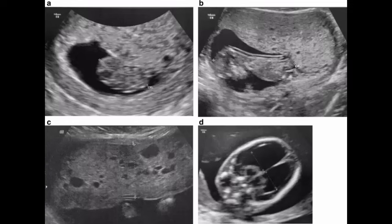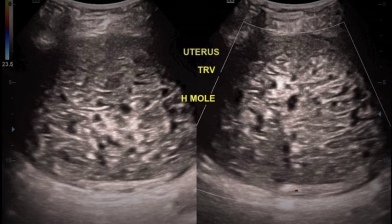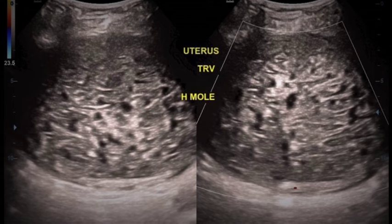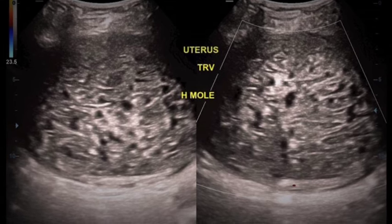Gestational trophoblastic neoplasia is a collective term for gestational trophoblastic diseases that invade locally or metastasize. Hydatidiform mole is the most common form of gestational trophoblastic neoplasia.